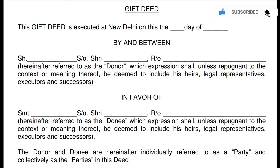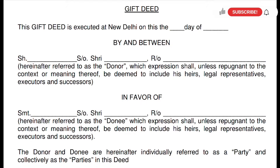Shri [dash], son of [dash], resident of [dash]. So, first of all, we will write the name of the donor. And the expression shall, unless repugnant to the context or meaning thereof, be deemed to include his heirs, LRs, executors and successors. So, if the donor has legal heirs, legal representatives, executors, successors — all of them are included. This clause is added to protect legal claims.